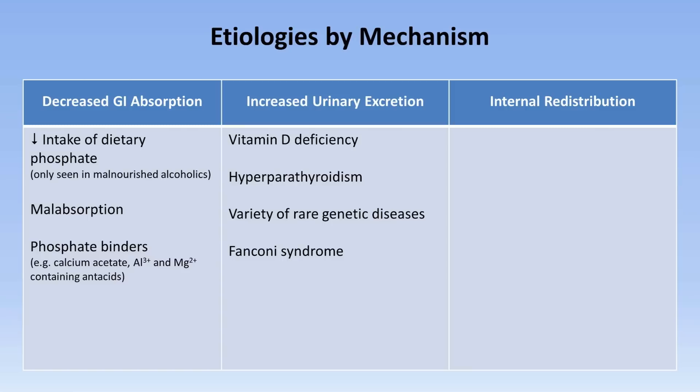Fanconi syndrome is a consequence of general proximal tubule dysfunction and leads to the combination of hypophosphatemia, glucosuria, hypouricemia, amino aciduria, and type 2 renal tubular acidosis. Presentation is more common in children than adults, where typical causes include Wilson's disease and the lysosomal storage disease cystinosis.